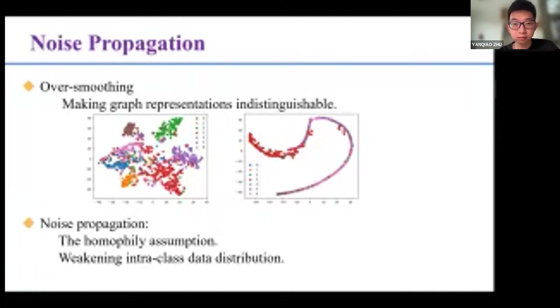We consider the propagation between different classes as noise propagation. The intra-class data distribution means that, with the transformation of data, the features of the nodes within the same class remain similarly distributed, and the distributions between different classes remain different. The noise propagation weakens the intra-class data distribution represented by each layer and leads to the failure of classification.